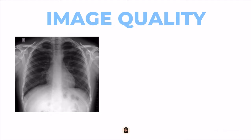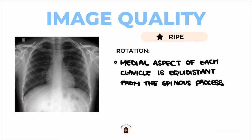In order to read an x-ray, the quality needs to be good, and in order to check that, we need to follow an acronym called RIGHT. R stands for rotation, and we check that by looking at the medial ends of each clavicle, right and left, and looking at the spinous processes of the spine, and making sure that these two are equidistant.